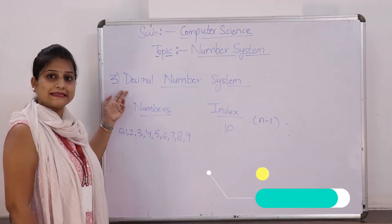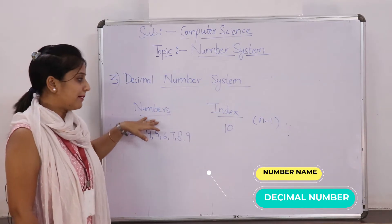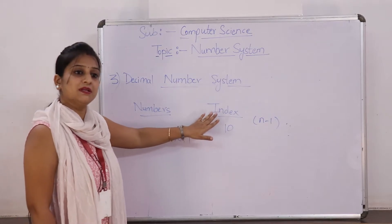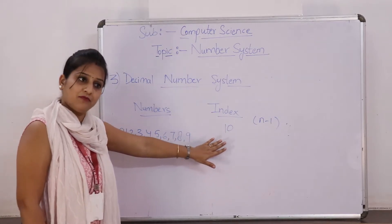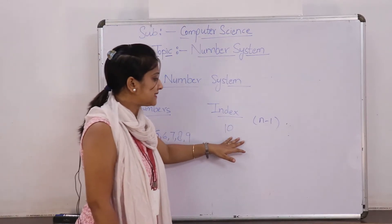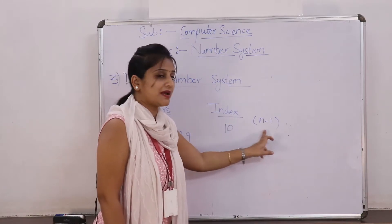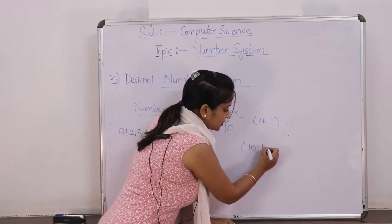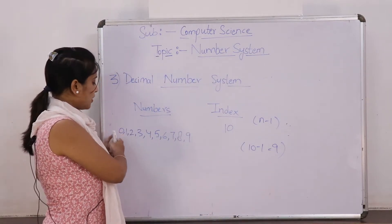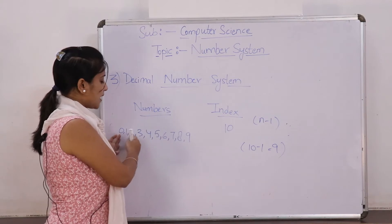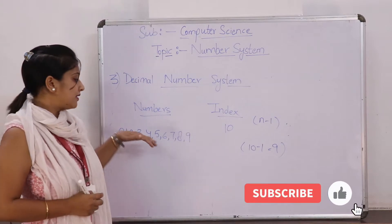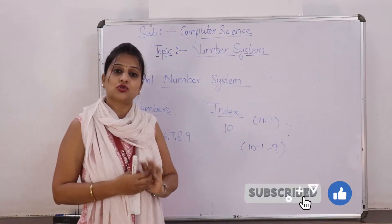Our third number system is the decimal number system. The base number is 10. Using n-1: 10-1 equals 9. The numbers present in the decimal number system start from 0 and go up to 9. So the digits are: 0, 1, 2, 3, 4, 5, 6, 7, 8, and 9.